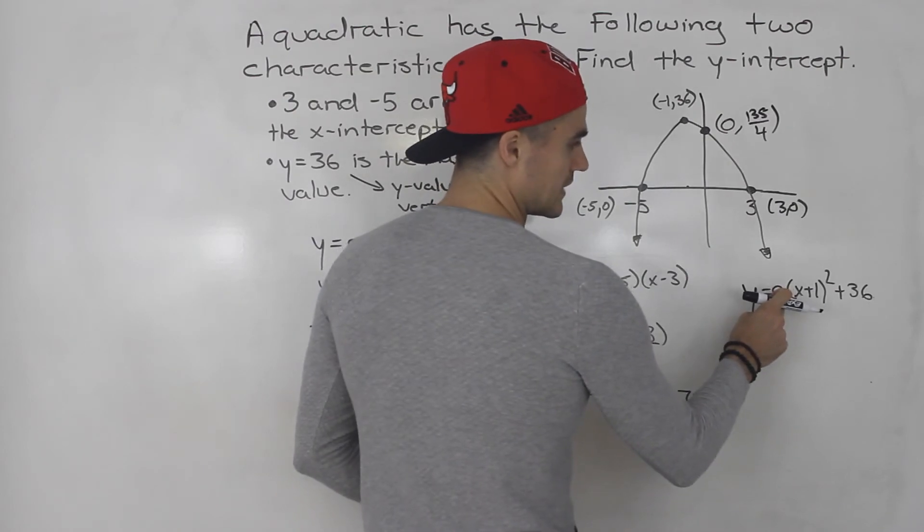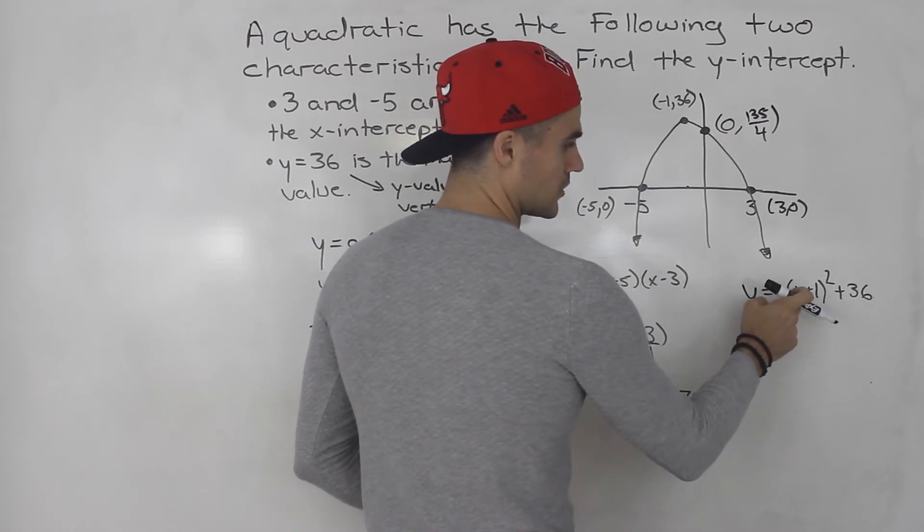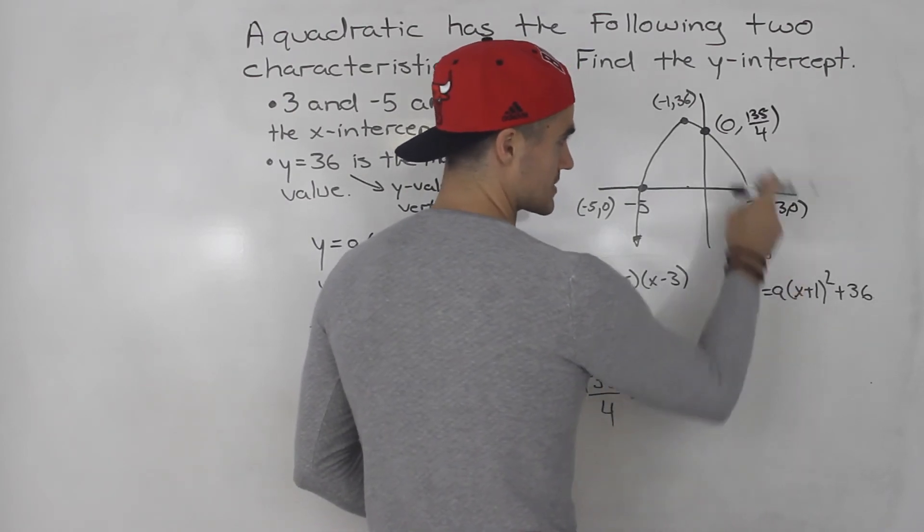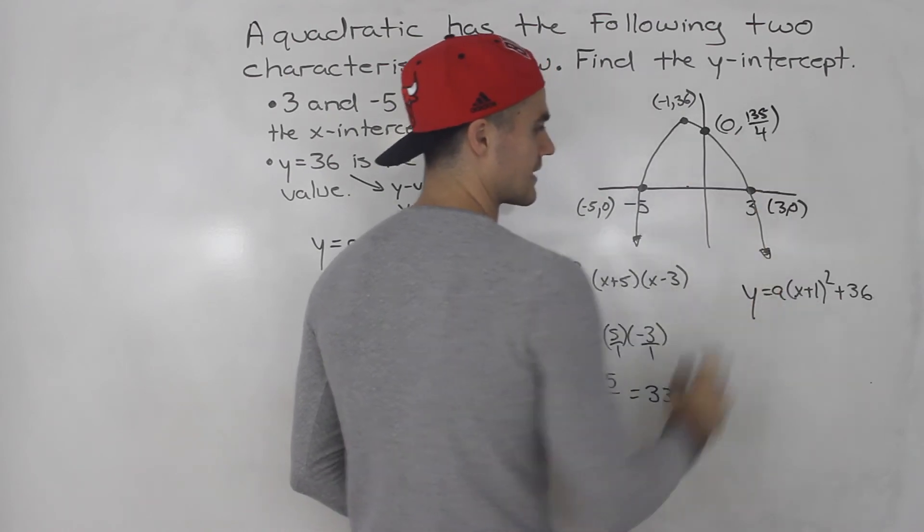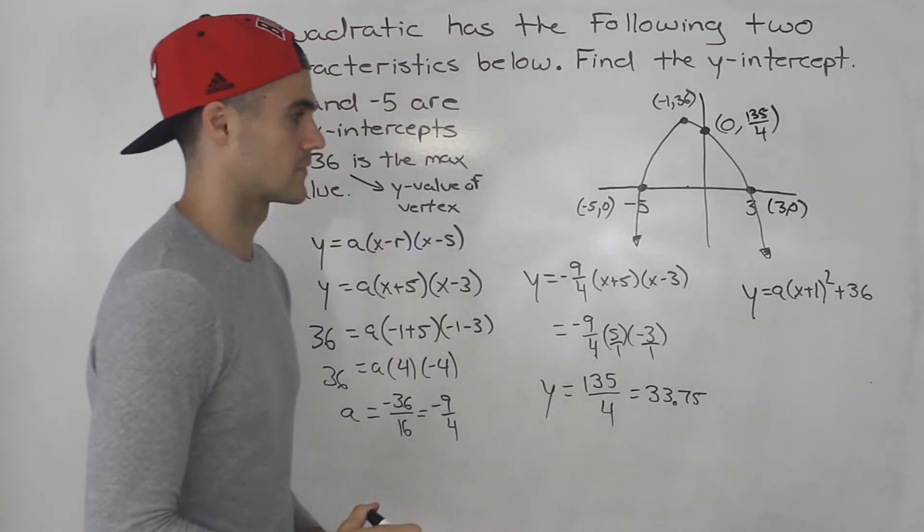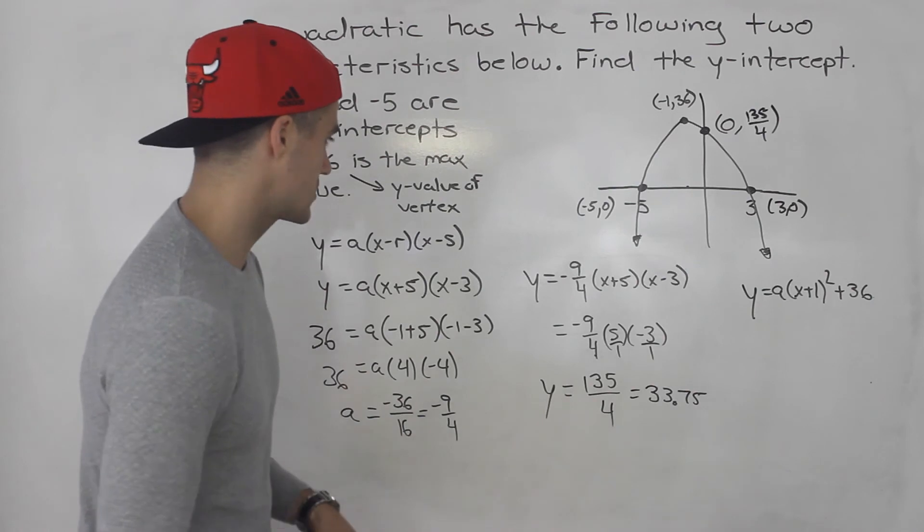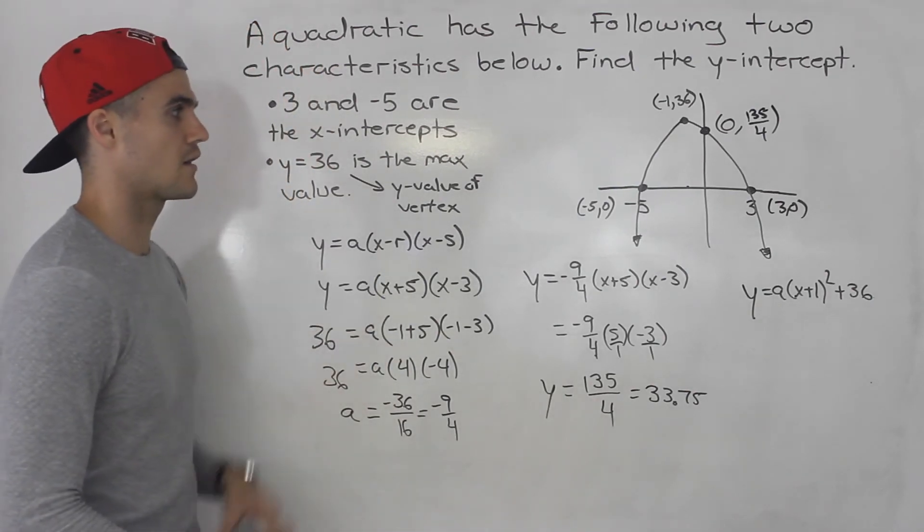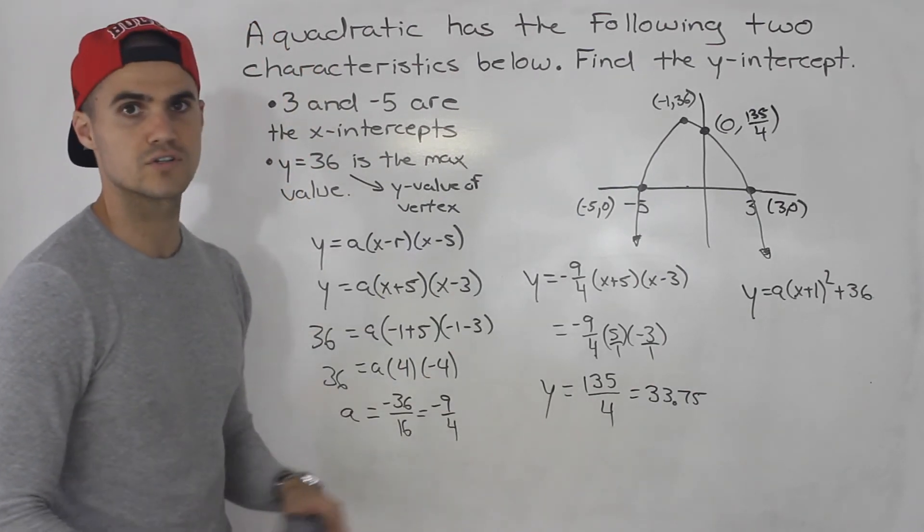So, a would be negative 9 over 4 when you solve for it. And then when you plug in 0 for x to get that y-intercept, you would end up getting that same value, right? So, either way works. I chose to do factored form, but you could have easily done vertex form as well.